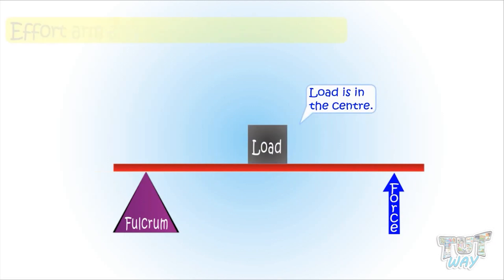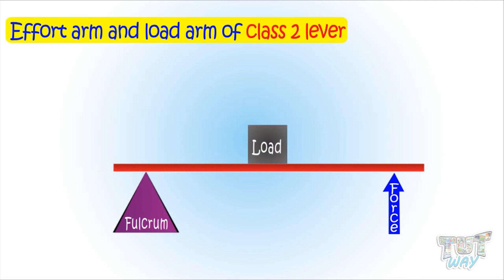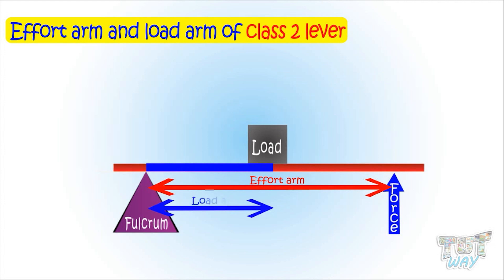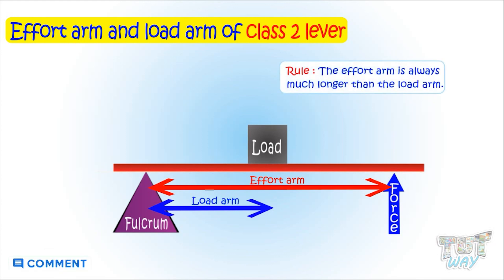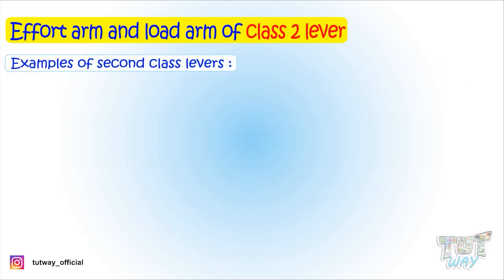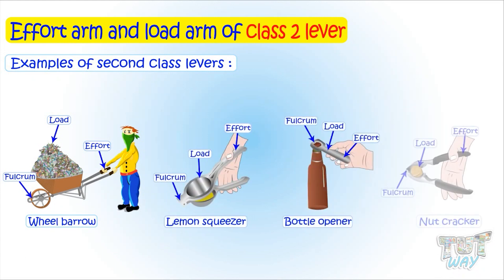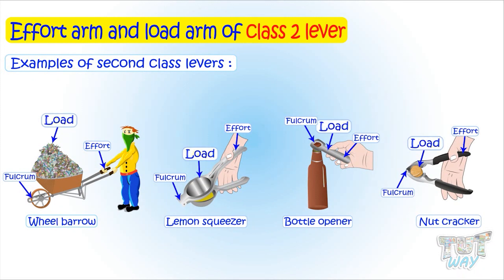Now let's learn about class 2 levers, where the load is in the center. Here the effort arm is the distance between the effort and the fulcrum, and the load arm is the distance between the load and the fulcrum. So in every case of a class 2 lever, the effort arm is much longer than the load arm, and class 2 levers are mostly used for heavy weight activities. Examples include a wheelbarrow, lemon squeezer, bottle opener, and nutcracker — all have the load in the center, so all have the effort arm much bigger than the load arm.